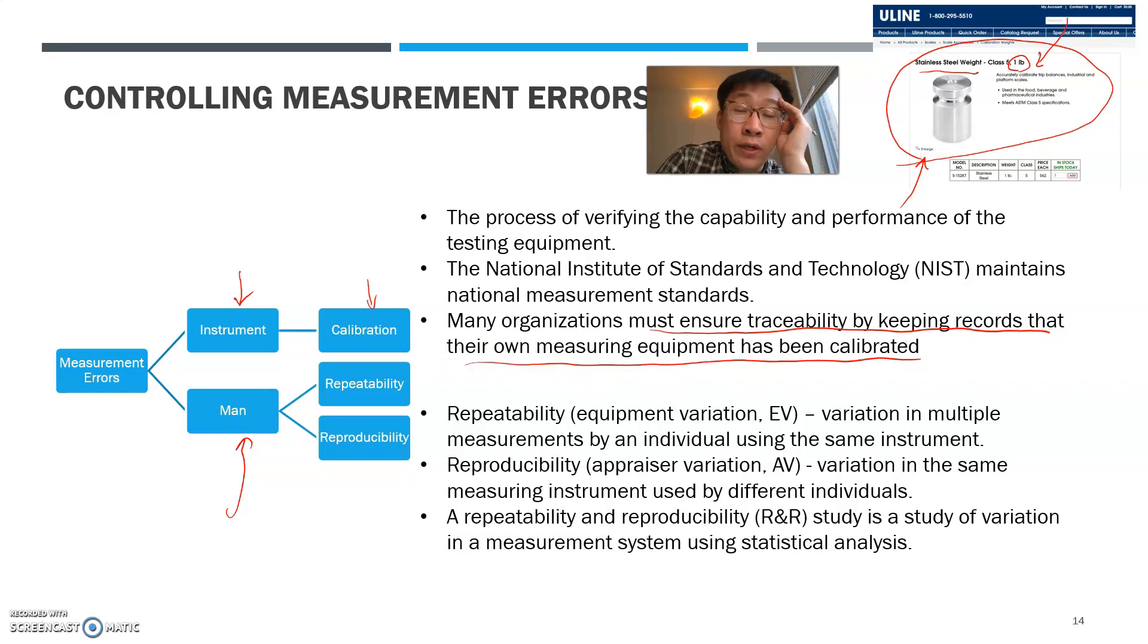Many organizations must ensure traceability by keeping records that their own measuring equipment has been calibrated. It's just like you're seeing in an elevator. You see when this elevator has been checked and things like that. Organizations are required to maintain the records of calibration. Think about the pharmaceutical companies or manufacturers that make something that sensitive impact to human bodies. In that case, less dosage or more dosage can both be dangerous. Therefore, it is very important that they calibrate their tools as often as possible.